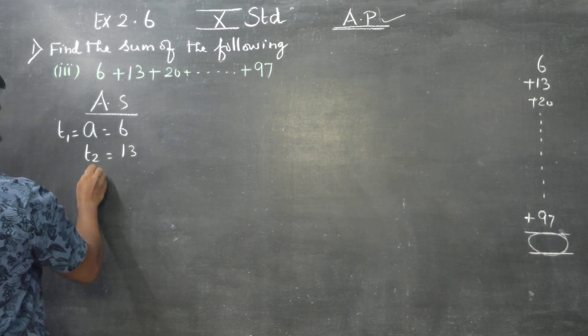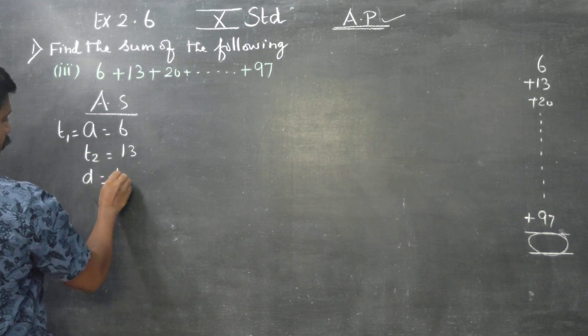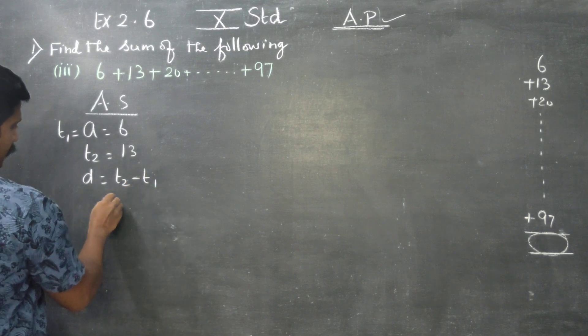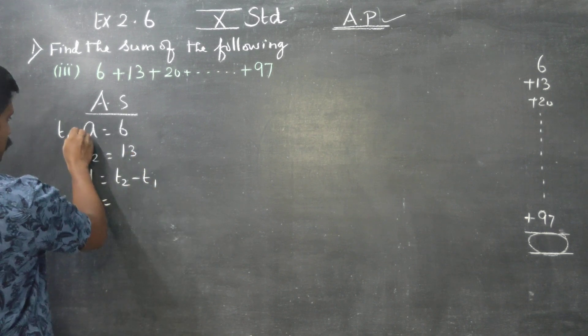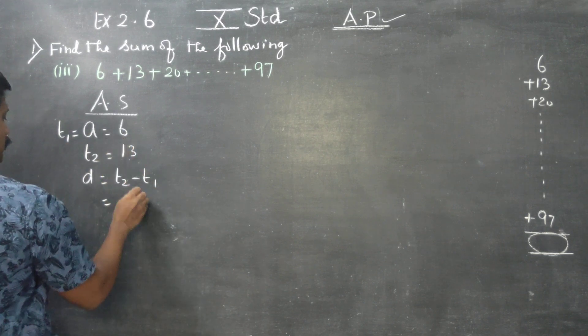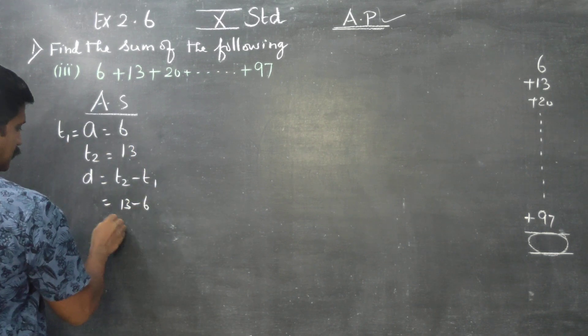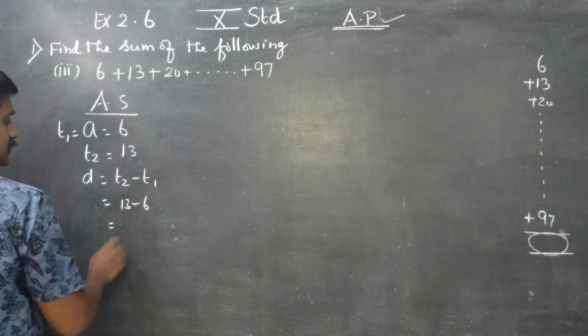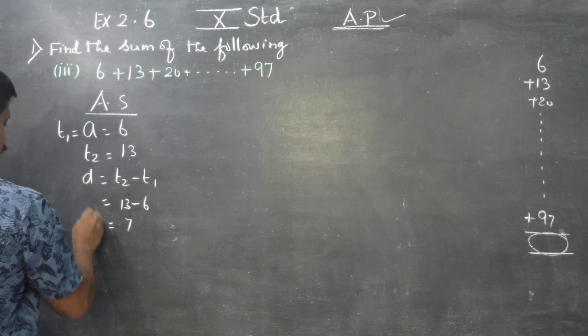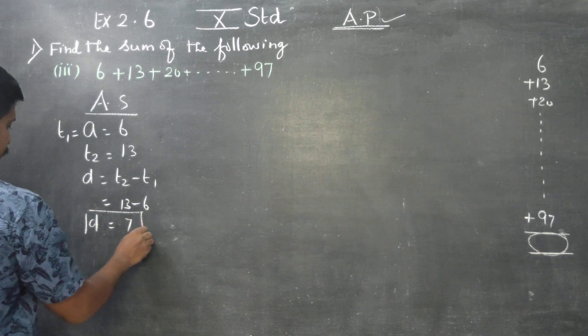What is T2? 13. What is my common difference? T2 minus T1: 13 minus 6 equals 7. This is my common difference.